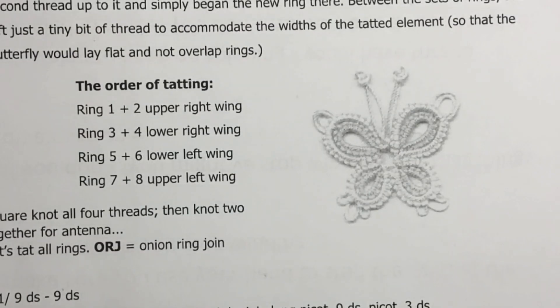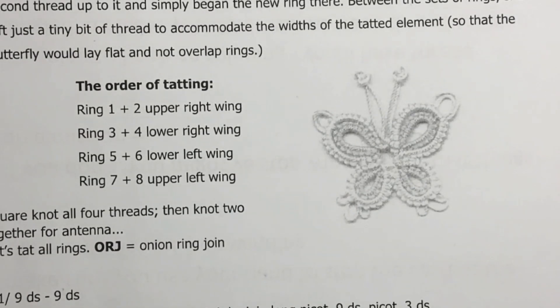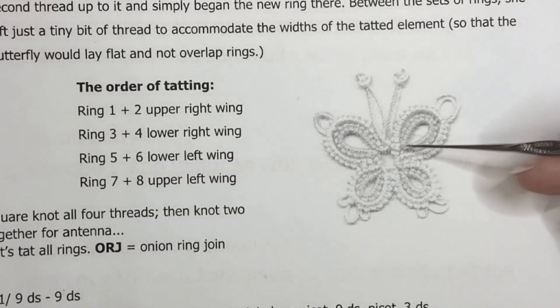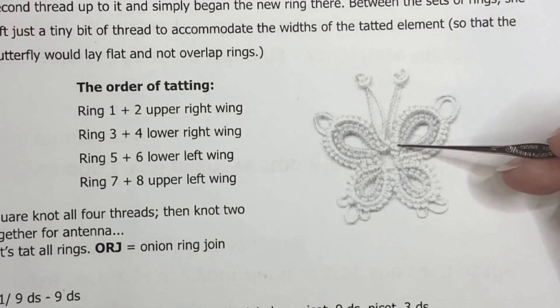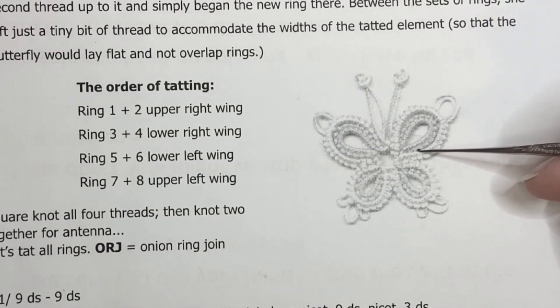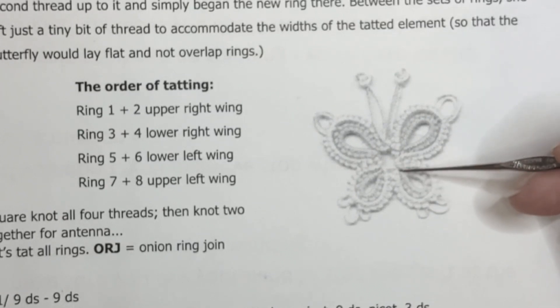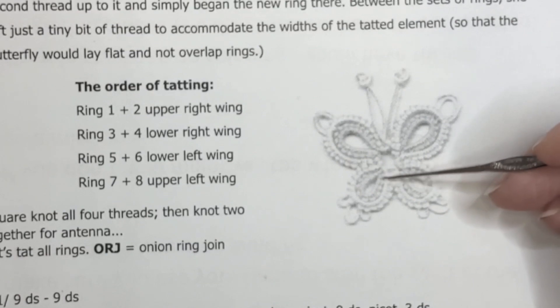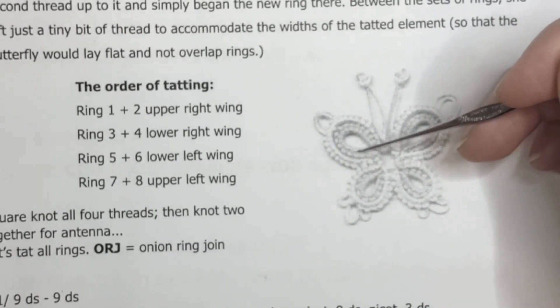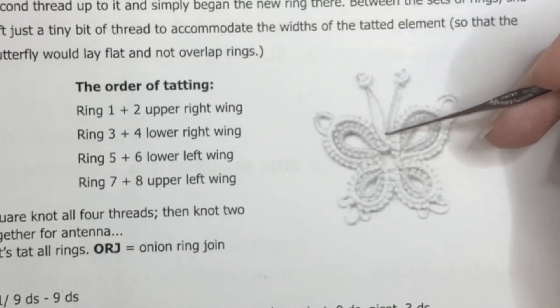Having a quick look at our pattern and the order of tatting. Ring 1 and ring 2 is our upper right wing. Our lower right wing is ring 3 and 4. The lower left wing rings 5 and 6. The upper left wing rings 7 and 8.